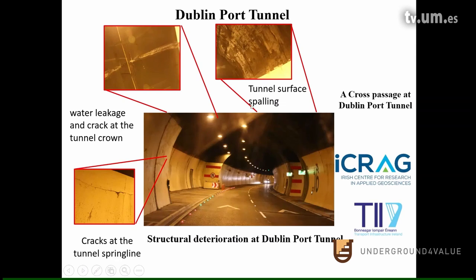Here is a picture of Dublin Port Tunnel. Like many other tunnels in the world and other underground sites, we observed a series of deterioration evidence. You can see tunnel surface spalling, water leakage, and cracks at the tunnel crown. In underground sites, those major cracks and spalling can be observed from time to time in many cases.